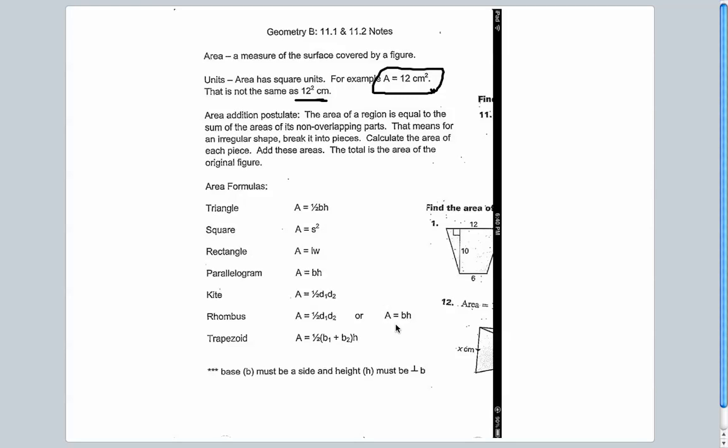We've got several formulas here: triangle, square, rectangle — many of these you're familiar with. Parallelogram, kite, rhombus, and trapezoid — those are probably new ones.